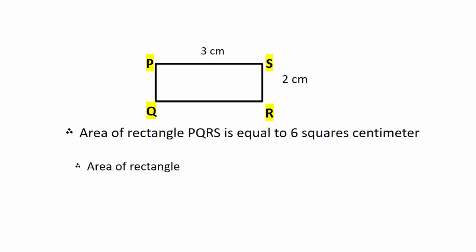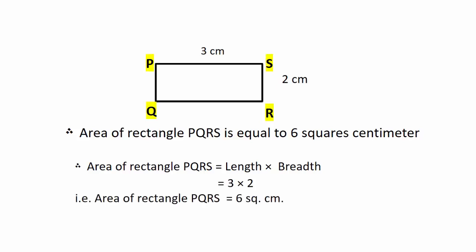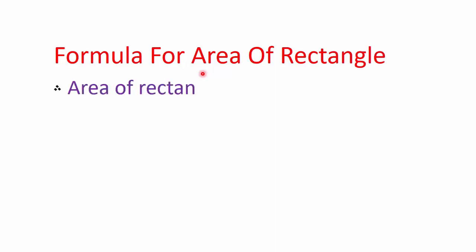The area of rectangle PQRS is equal to six square centimeters. Formula for area of a rectangle: Area of rectangle is equal to length multiplied by breadth.